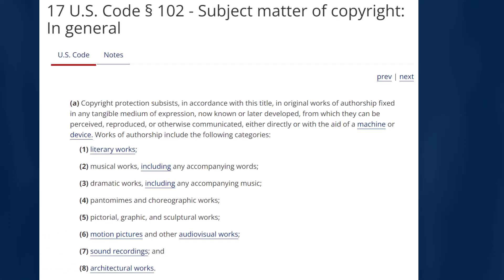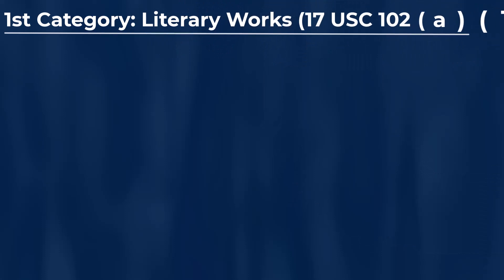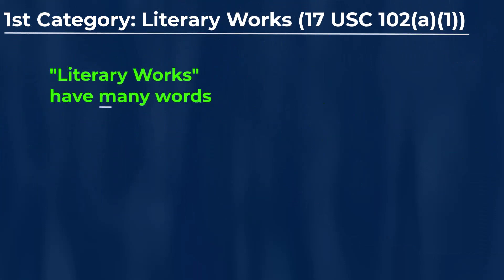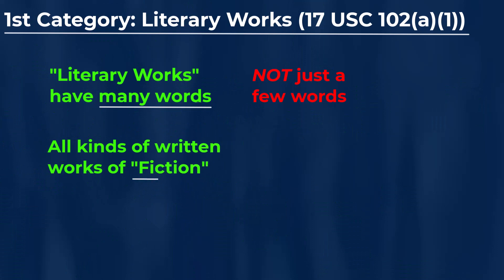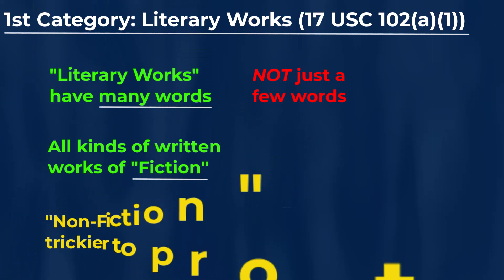Next, I'll show some specific examples of various types of creative works for these eight categories that may generally be protected by U.S. copyrights. The first category is for literary works. Literary works are generally going to be creative works consisting of many words.